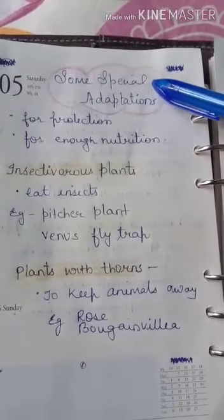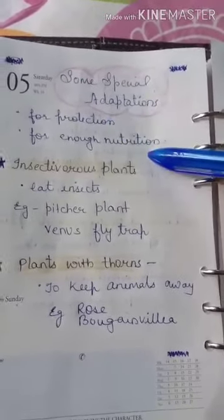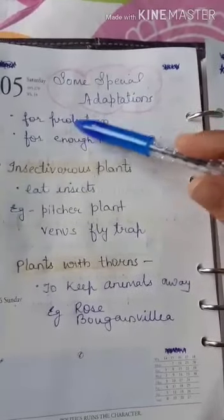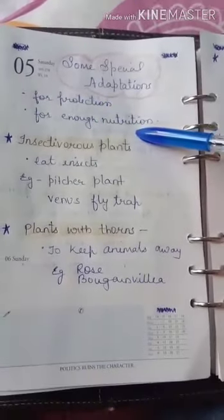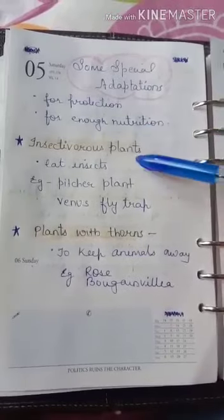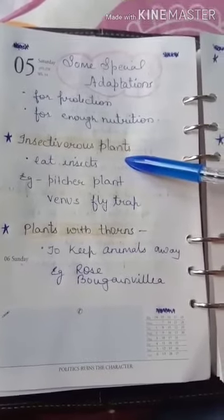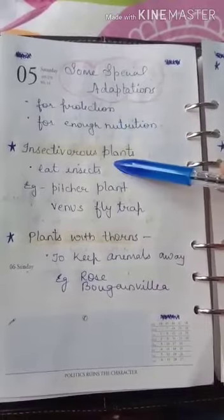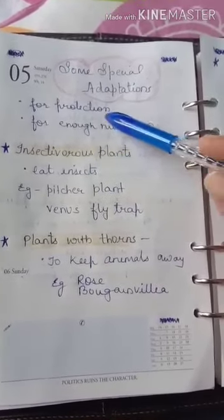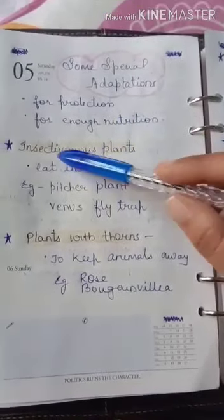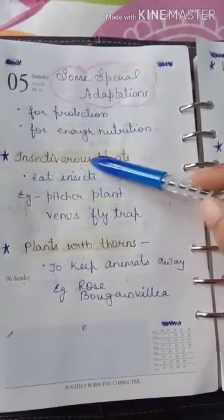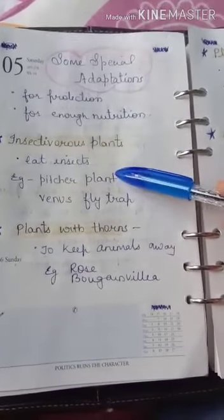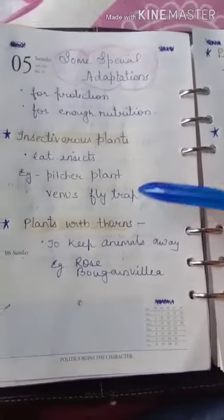Some special adaptations are specially for protection and for nutrition. Insectivorous plants, jo insects khate hain, mein special adaptations hote hain taaki wo insects ko kha sakein aur nutrition le sakein. Examples are pitcher plant and Venus flytrap.